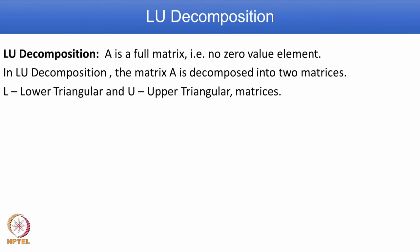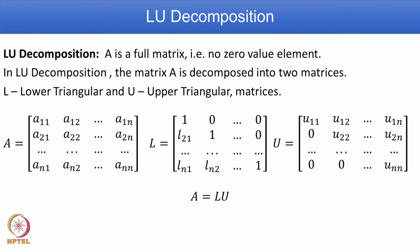We have listed three direct methods: Gauss elimination, TDMA, and LU decomposition. In LU decomposition, the full matrix A is decomposed into two matrices: A = L * U, where L is the lower triangular matrix and U is the upper triangular matrix. In this class we have seen the tri-diagonal matrix algorithm in detail with an example problem and listed its advantages. In the next class, we will see details of LU decomposition, again with an example problem. Thank you.